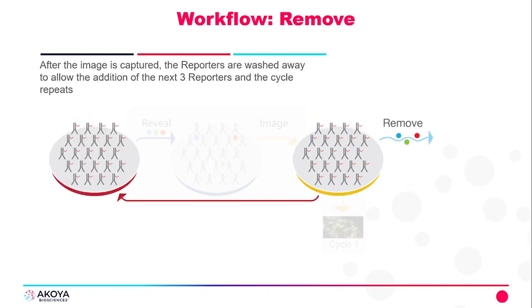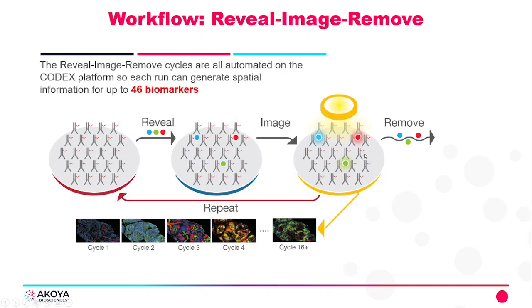We're then going to use Codex automation to take a picture of where these reporters have bound to their target antibodies, and then we'll remove these reporters so that we can repeat the process of reveal, image, and remove. This process allows us to acquire all of our markers with Codex.